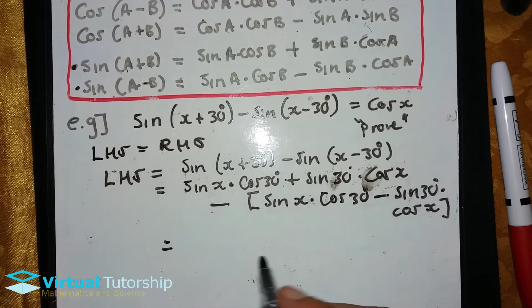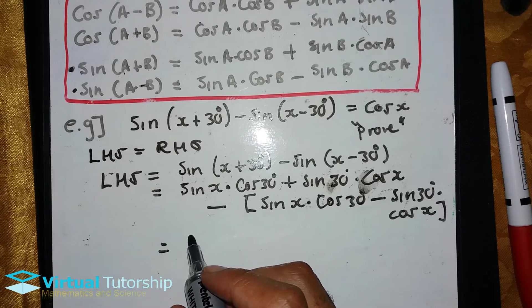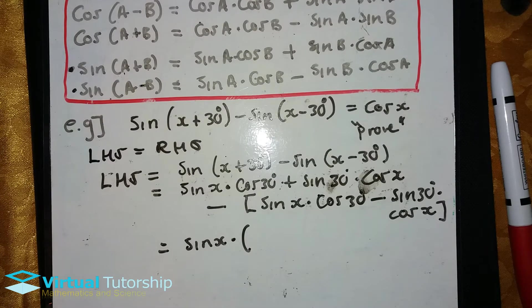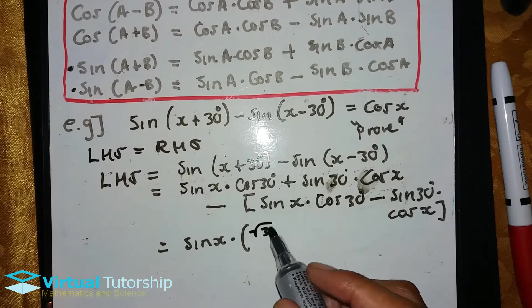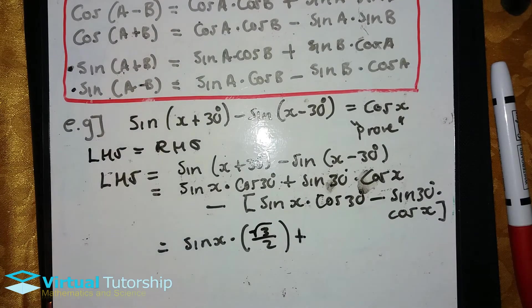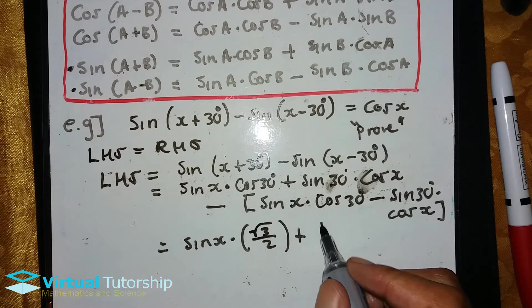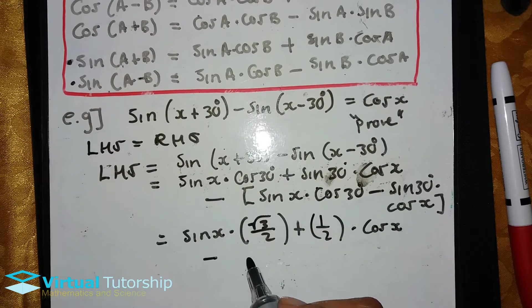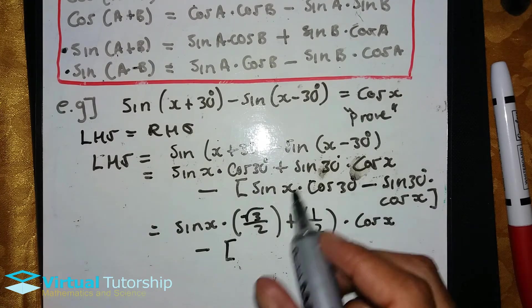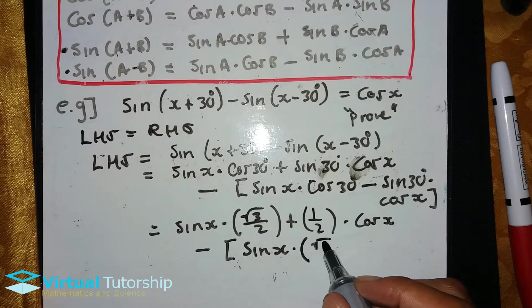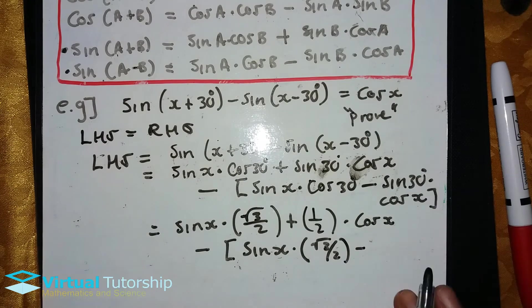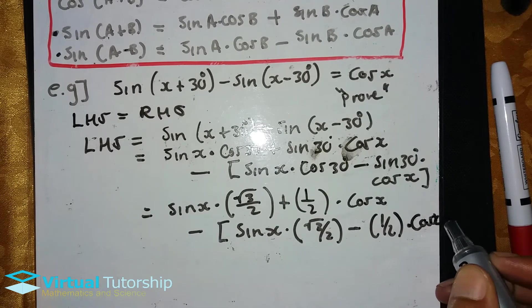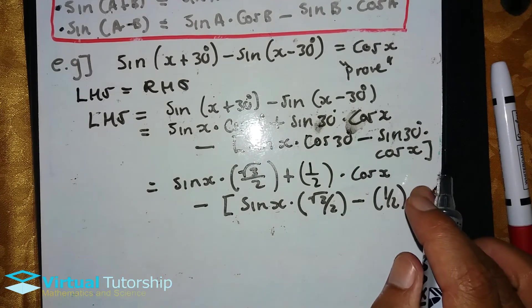Okay, now the 30 degrees is a special angle, so we can simplify. It's sine x times cosine 30 degrees, which is square root of 3 over 2, plus sine 30, which is a half, times cosine x. Minus in the square bracket: sine x times cosine 30 degrees, which is square root 3 over 2, minus sine 30 degrees, which is a half, times cosine x.